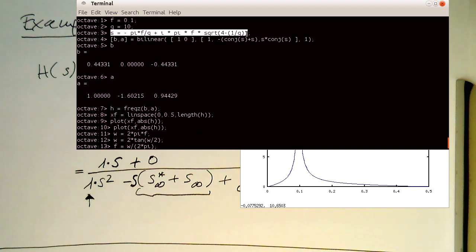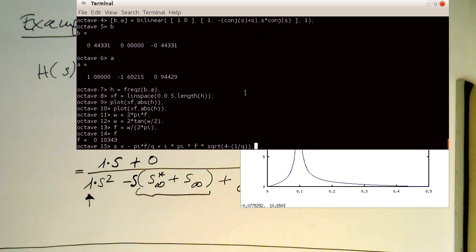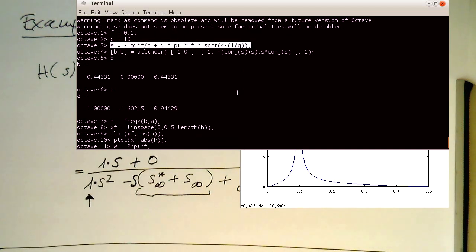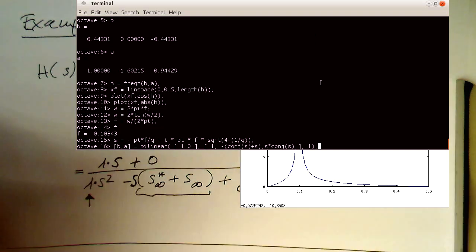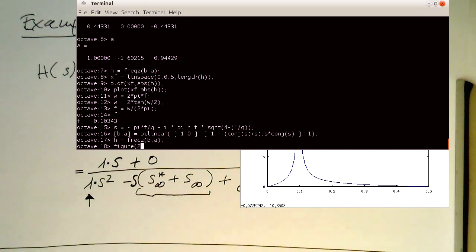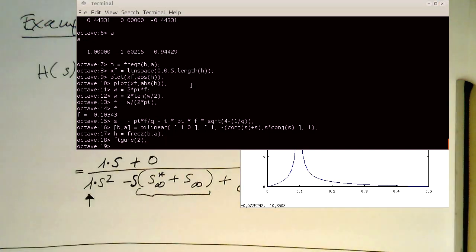So what we just need to do is we just steal the definition of s here and calculate our new zeros and poles, and use then the bilinear function here, creating a new frequency response. Just to make it comparable, let's just create another figure for this and keep the other one also on the screen here.